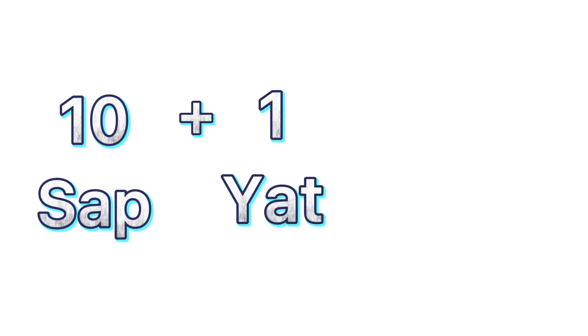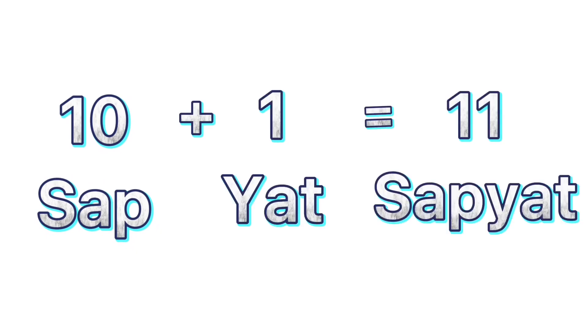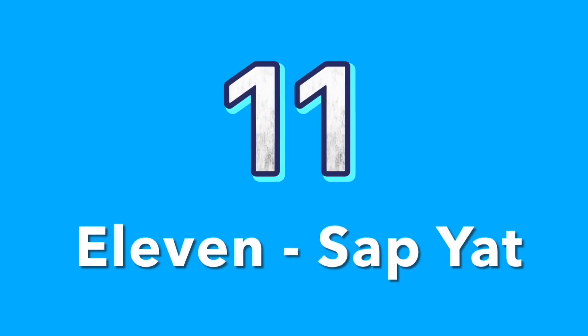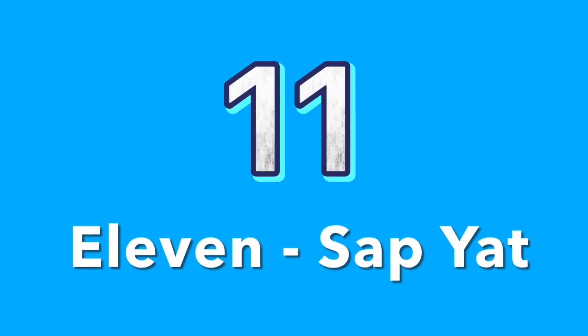From 11 to 20, say the word for number 10 which is sap, plus the word for number 1 which is yat. So it becomes sap yat. Then continue with the following numbers up to number 19. Number 11, sap yat.